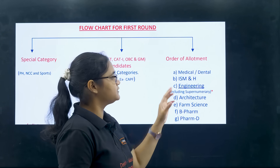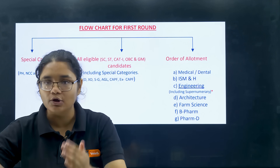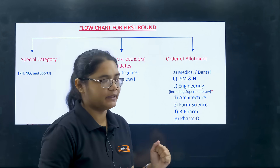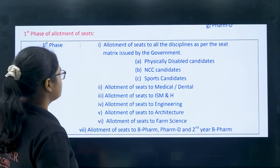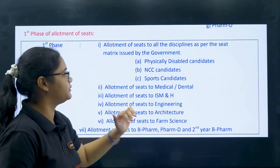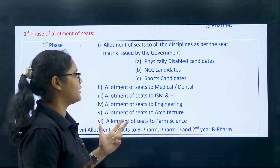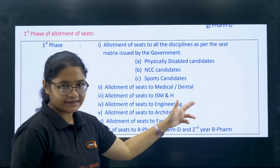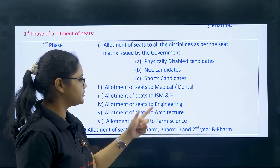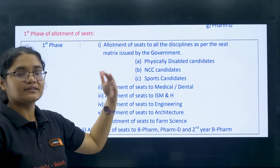If you have filled all these options, the computer will check medical options first, then ISM options, then engineering options, and so on. In the first phase, allotment of seats to all disciplines is done as per the seat matrix issued by the government — physically disabled candidates first, then NCC, then sports, followed by medical and dental, ISM, engineering, architecture, farm science, B Pharma, D Pharma, and second-year B Pharma.